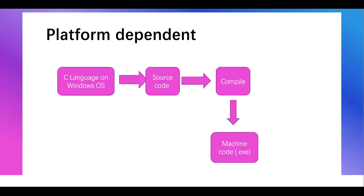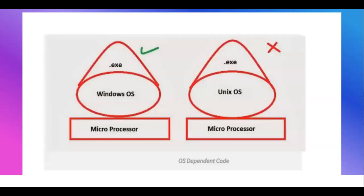Now, I have source code written in C language on a Windows operating system. That code I have compiled and it converts into an object file, and finally it converts into machine code. At that point, a .exe file gets generated on the Windows system. Now I have two friends — one has Windows OS and another has Unix OS. I gave that same .exe file to both of them. The Windows OS friend can run it and check everything. But the Linux OS friend cannot run it. That code is completely dependent on Windows OS; it cannot run on another platform.